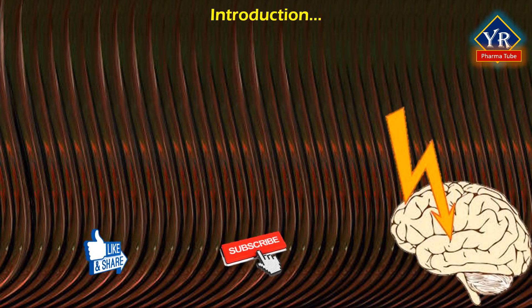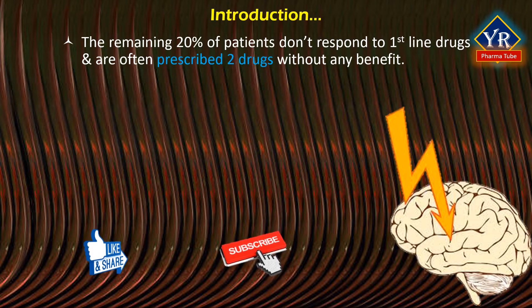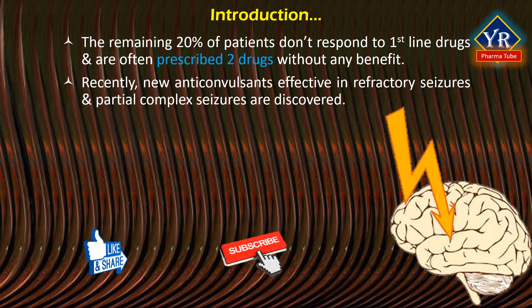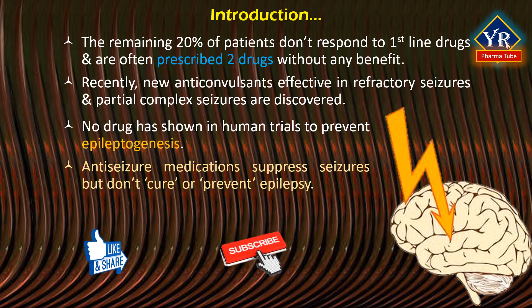Despite recent advances in neurobiology and significant insight regarding the molecular dysfunction of epilepsy, the remaining 20% of patients don't completely respond to current first-line therapeutic drugs and are most often prescribed more than two anticonvulsants without any obvious benefit. Recently, much effort has been made to discover new anticonvulsants effective in refractory seizures and partial complex seizures. However, no drug has been shown in human trials to prevent epileptogenesis, meaning anti-seizure medications suppress seizures but don't cure or prevent epilepsy.